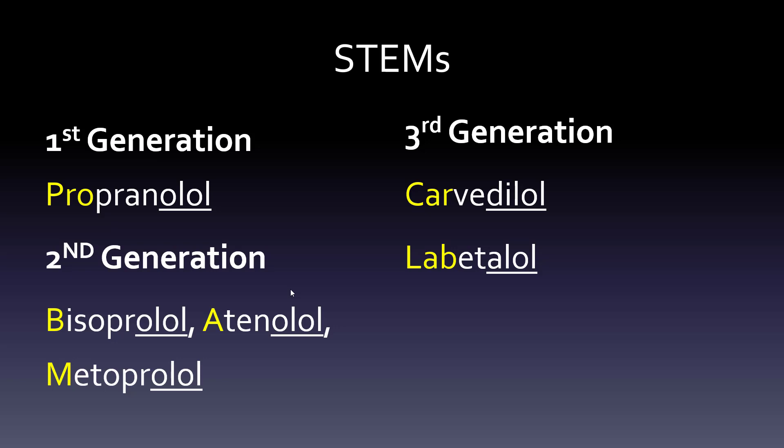Which is first generation? The PRO — think of 'primary,' it's your first grade. And then BAM (B-A-M) for your second generation. Then I put CARLAB to give you two of the third generation ones.